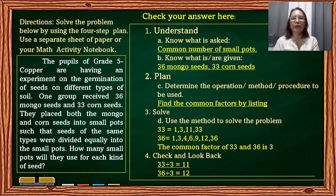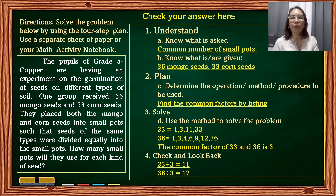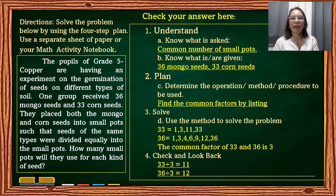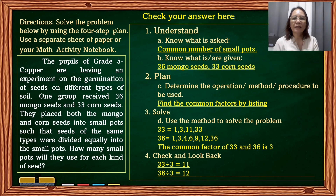The factors of 33 are 1, 3, 11, and 33. The factors of 36 are 1, 3, 4, 6, 9, 12, and 36. The common factor of 33 and 36 is 3. So in number 4, you divide 33 by 3, the answer is 11; and 36 divided by 3, the answer is 12. That's all for today, have a lovely day everyone.